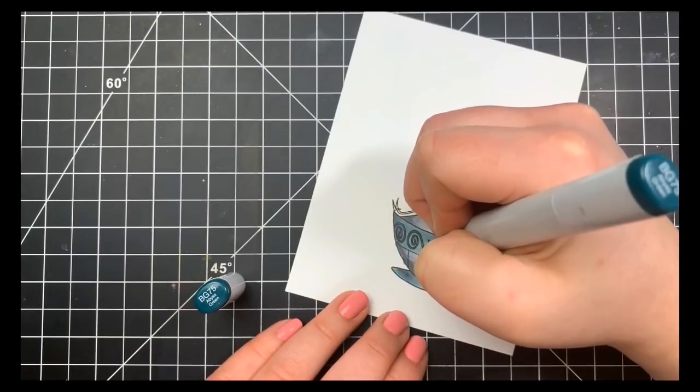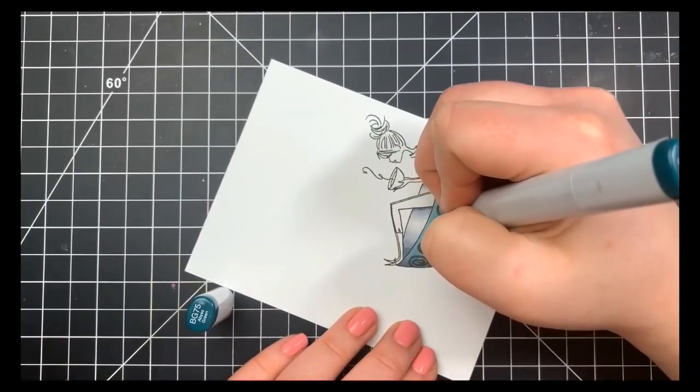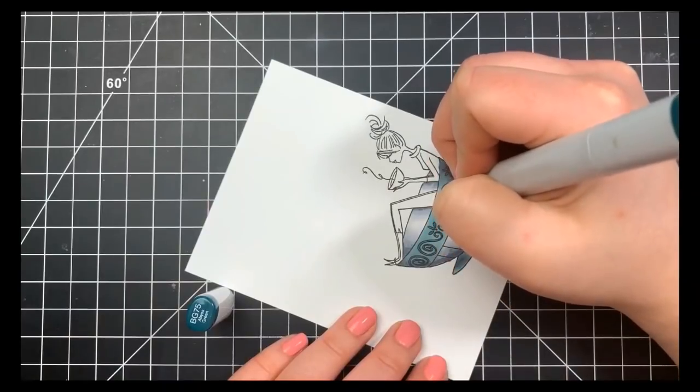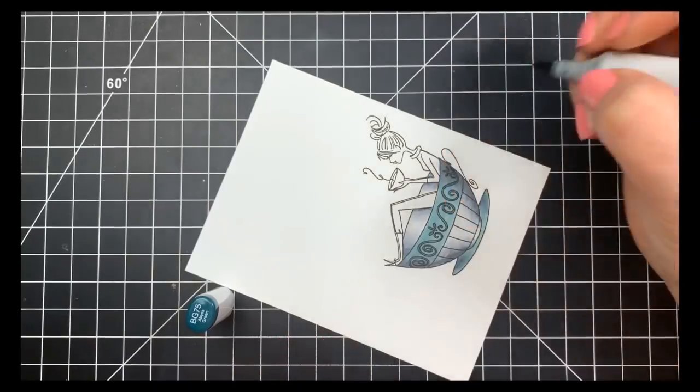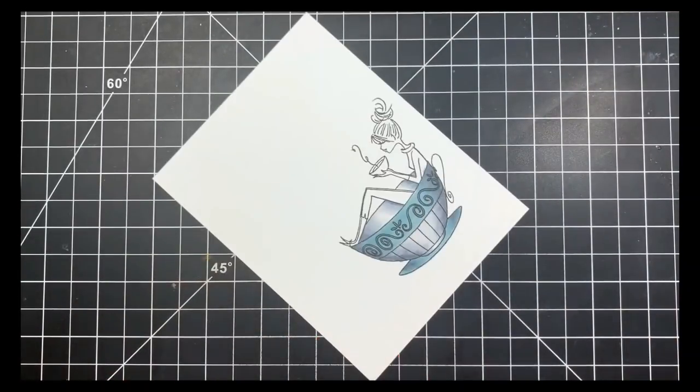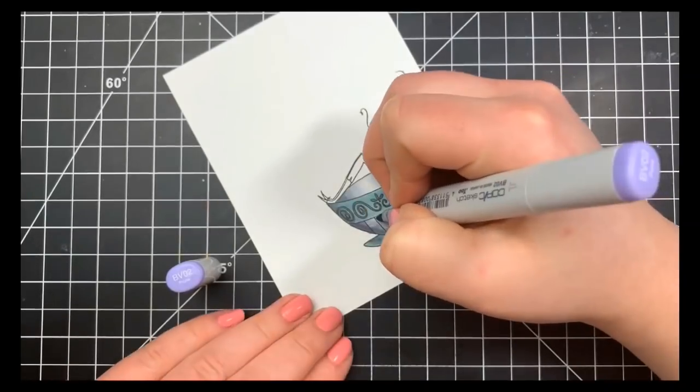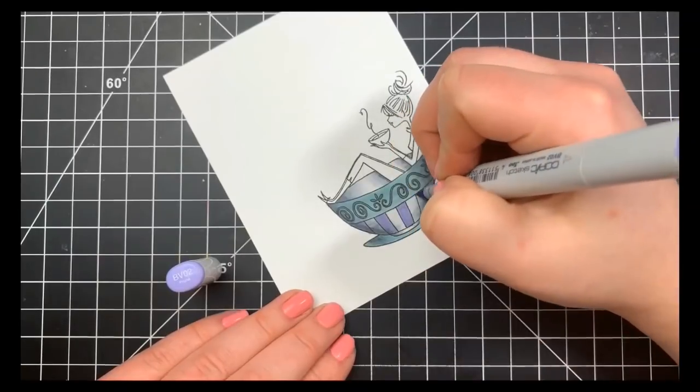Now for a teeny tiny area like this, I've heard a lot of people say that they have a hard time with Copic markers getting into teeny tiny areas like this. You just want to make sure that you're using the very tip of the marker and barely touching the paper. The ink will spread a little bit, but I find that it spreads less once you have kind of like a base layer down. And being we already have those cool grays down plus that BG72, I didn't really have a problem.